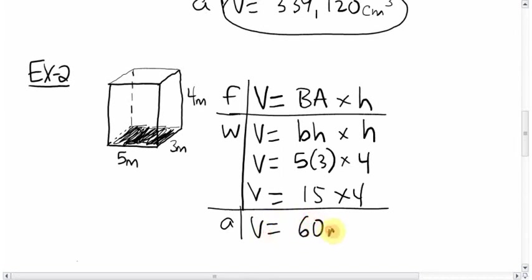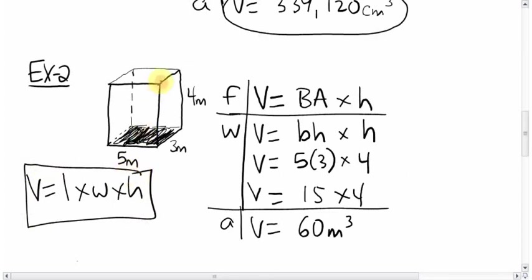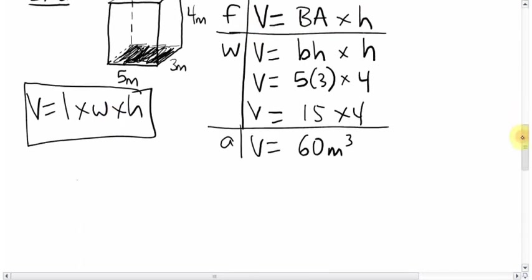And your final answer being 60. In this case, it's meters cubed. So again, you could use, if you want, length times width times height. We did, back when we did science, and you can use it here. But again, that only works for rectangular prisms or cubes. But this formula also works as well. So either way, you'll get the same answer.